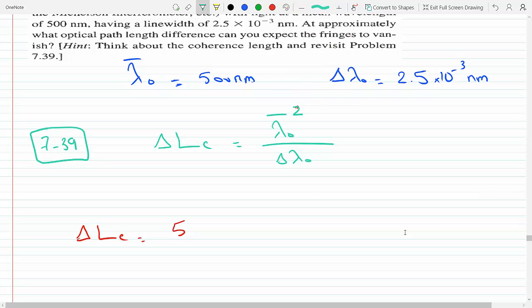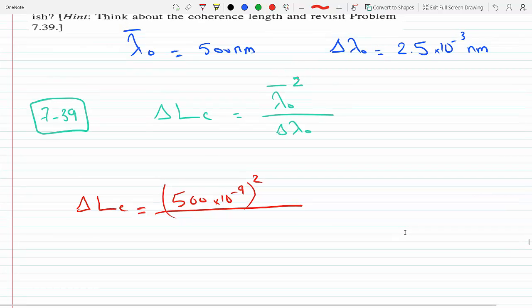So this is 500, change it to meters, times 10 to the minus 9, squared, divided by 2.5 times 10 to the minus 3, and another 10 to the minus 9 to change it to meters.